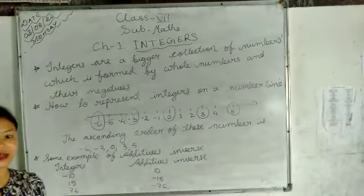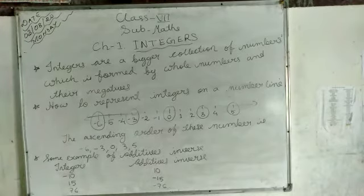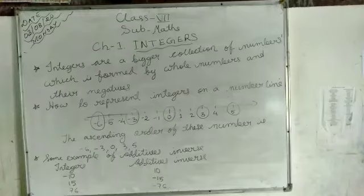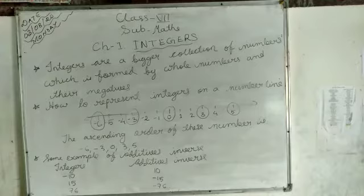Integer means all the numbers like negative numbers, positive numbers, and zero, including zero also. The proper definition of integers is: integers are a bigger collection of numbers which is formed by whole numbers and negatives. Whole numbers means from 0 to 1 to 3. Negative means all the negative numbers.